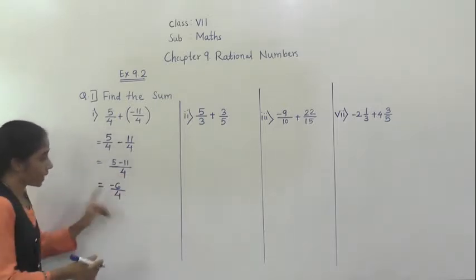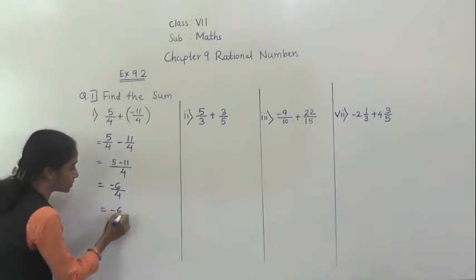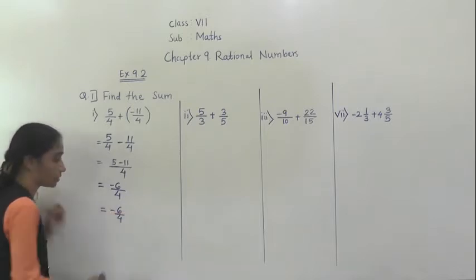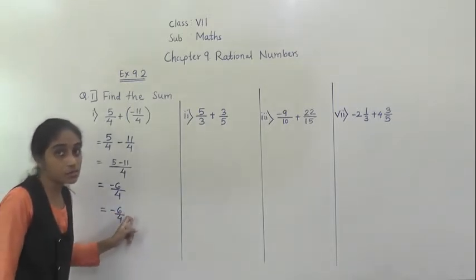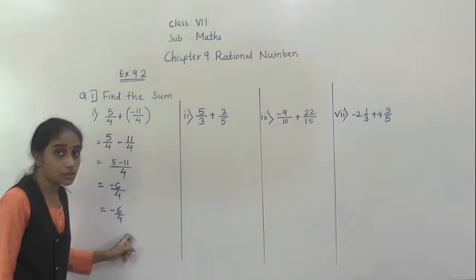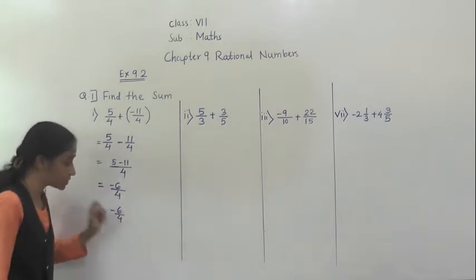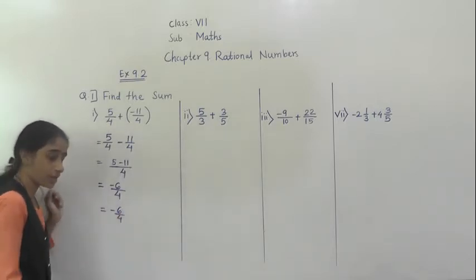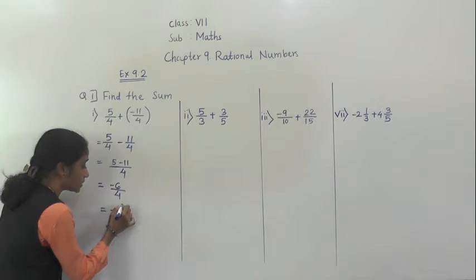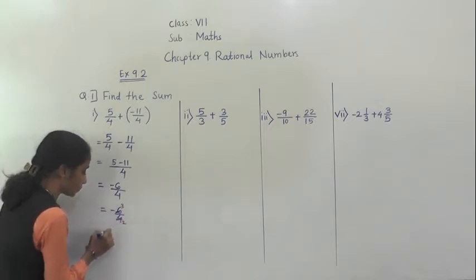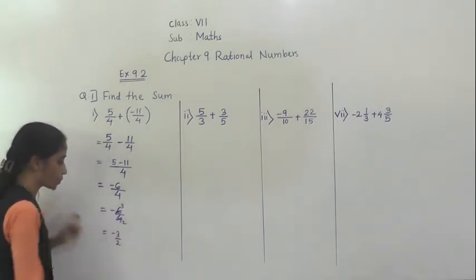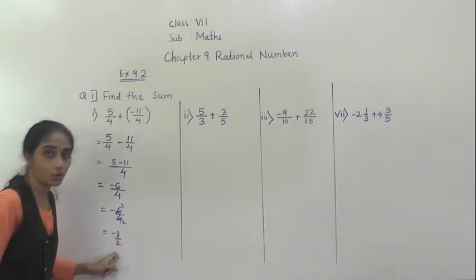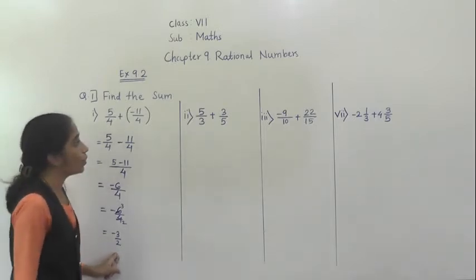After that we have to think for the sign. Hide the sign and check which is greater. 11 is greater and its sign is negative, so for the answer also negative sign. Denominator as it is. So we got minus 6 upon 4. We can write this in simplest form. Both numbers are divisible by 2, so minus 3 upon 2.